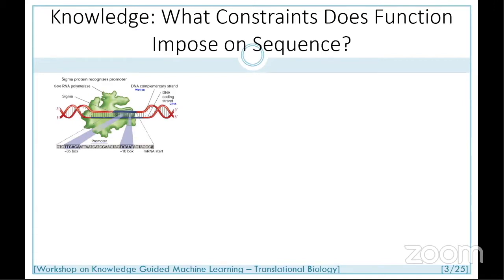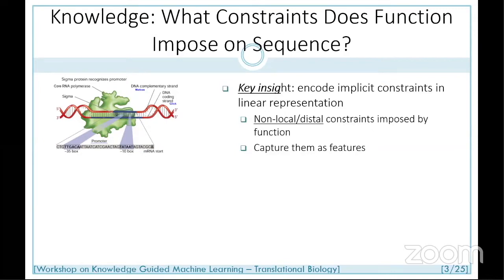We got interested through a collaborator at Maryland College Park. Our first inclination was to understand the biology: the reason this region in DNA is a promoter — initiating the signaling that ends with transcription — is because a specific protein, a core RNA polymerase, identifies a hidden signal in this region, binds to it, and starts a whole series of events. We understood that function encodes implicit constraints even in a linear one-dimensional representation of bases.